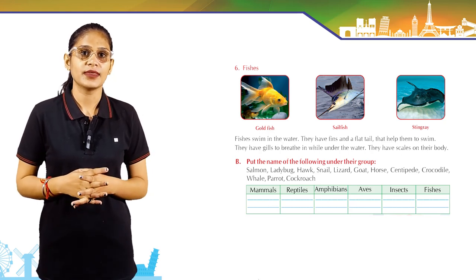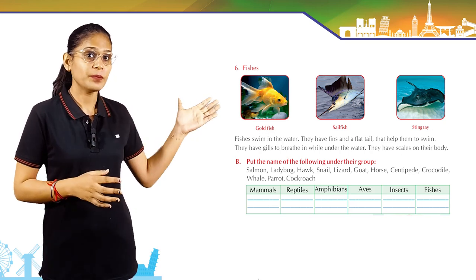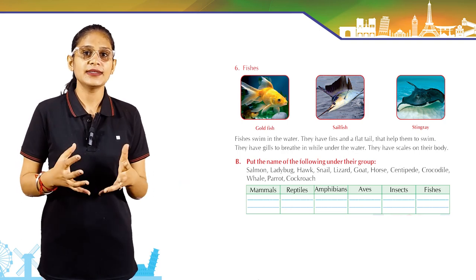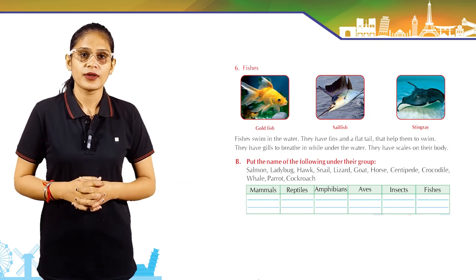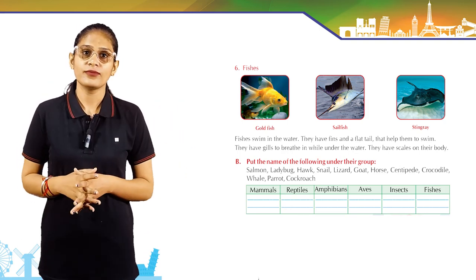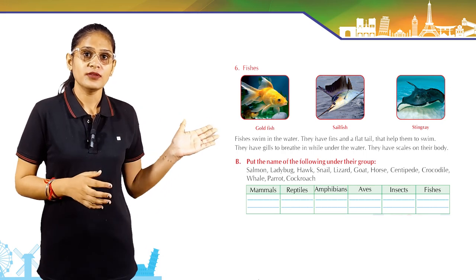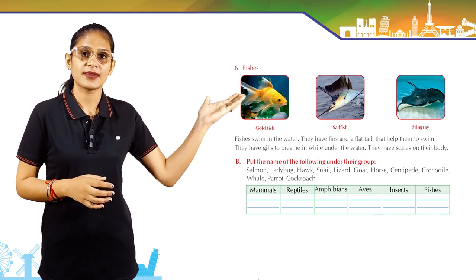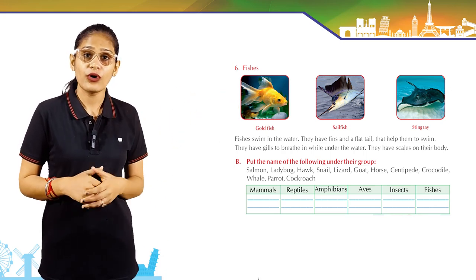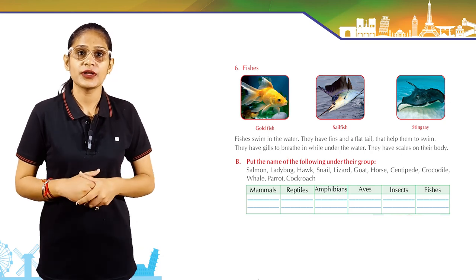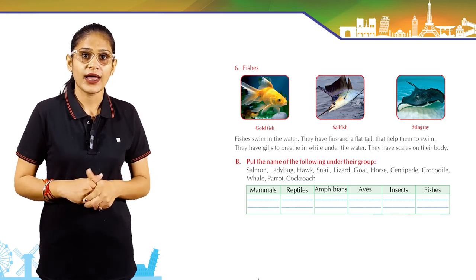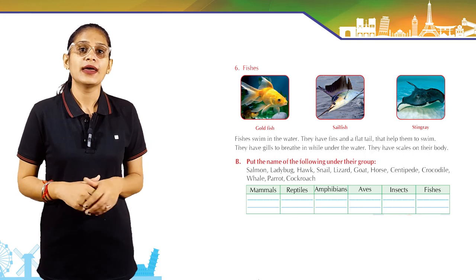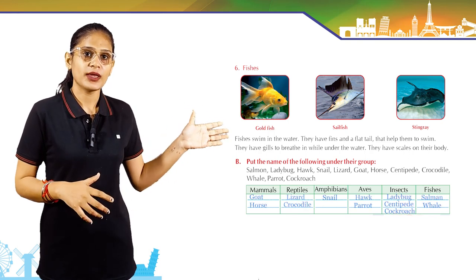Now come to Part B. Put the name of the following animals under their correct groups. The animals are: salmon, ladybug, hawk, snail, lizard, goat, horse, centipede, crocodile, whale, parrot, and cockroach.